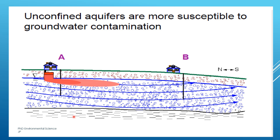Unconfined aquifers are more susceptible to groundwater contamination. This image shows two houses, house A and house B, each with a well that taps into an unconfined aquifer. The red area represents a contamination plume originating from a source near house A — it could be from leaking septic systems, industrial waste or agricultural runoff. The well at house A is at risk of drawing contaminated water. The well at house B is located farther from the contamination source and may not be affected immediately, depending on the flow direction and speed.